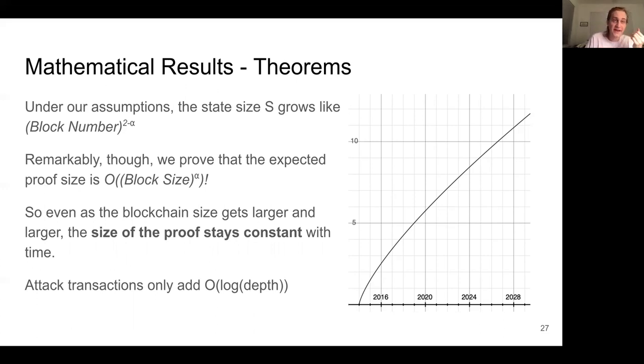And an additional fact is that the proof still holds when some of the transactions are designed to make the proofs as large as possible. So if there's some kind of DOS attack happening, which is specifically designed to make proof sizes large by making UTXOs and then spending them at inopportune times, then the additional proof size caused by this attack is only the number of attack transactions times the log of the depth. So in other words, there's a smooth interpolation between the constant size performance in the average case and then the optimal performance in the adversarial case, which is the log of the state size.